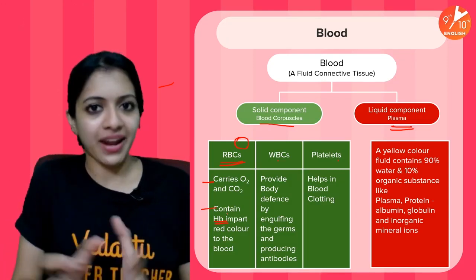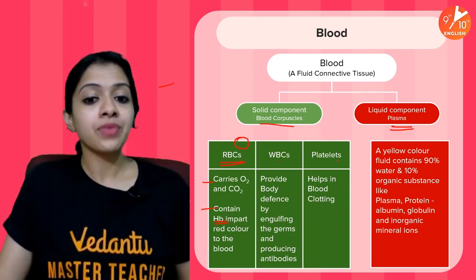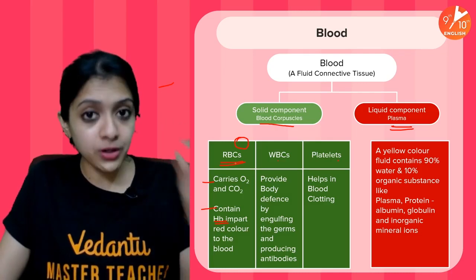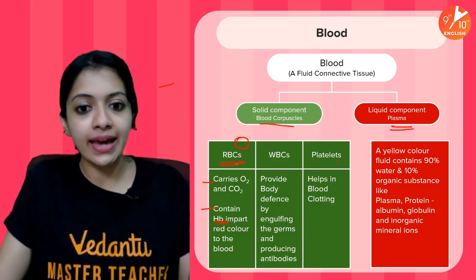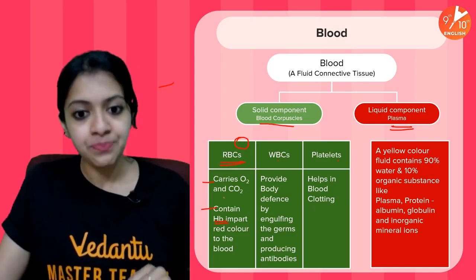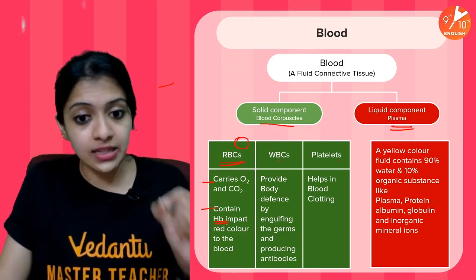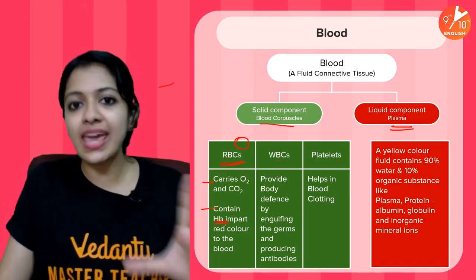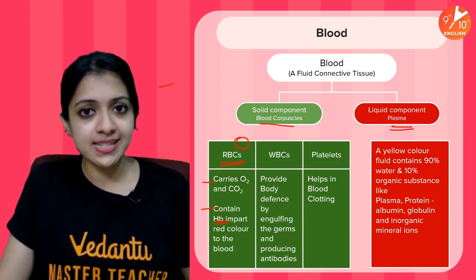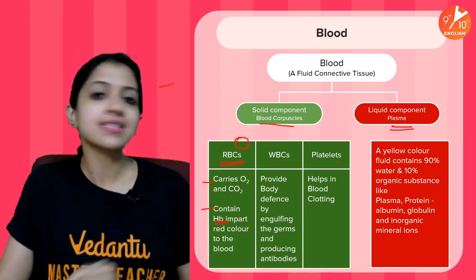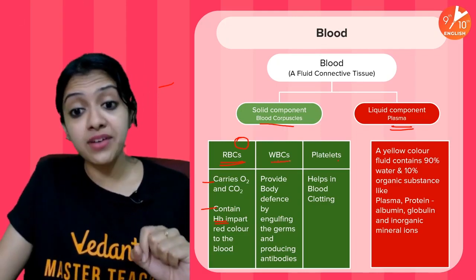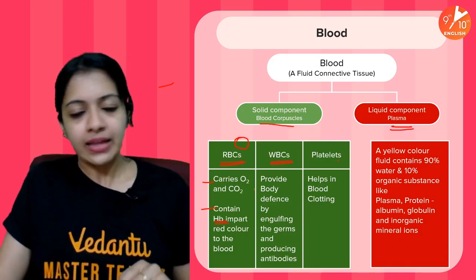To make it easier to remember, imagine the red blood cells to be like a taxi. The hemoglobin is the taxi driver, and it is carrying around different passengers — which are mainly oxygen and carbon dioxide. That's about the red blood cells.